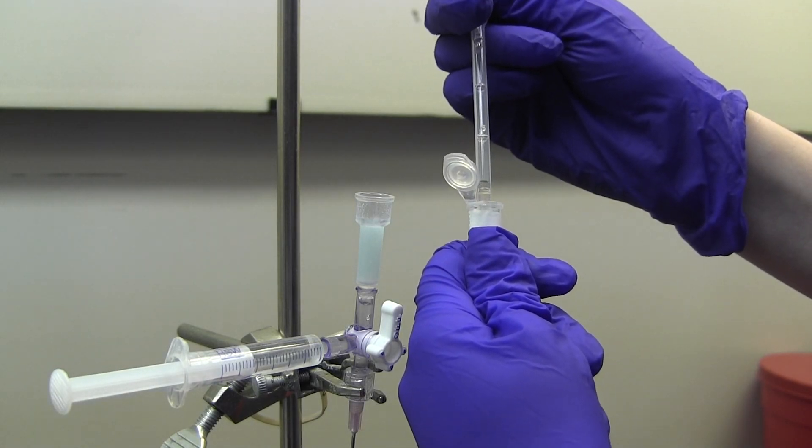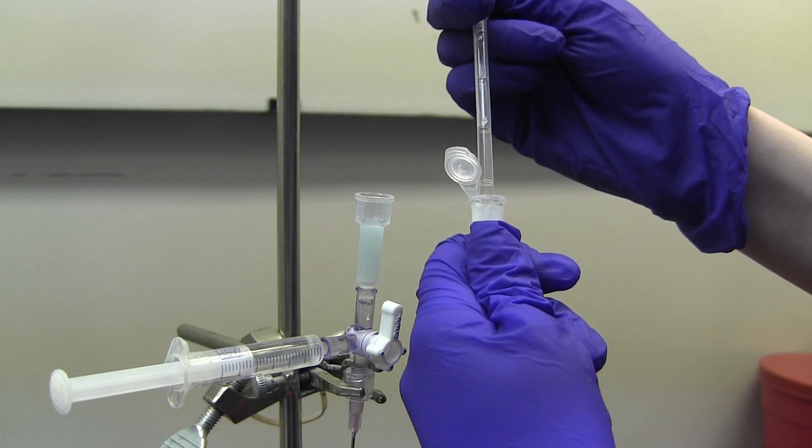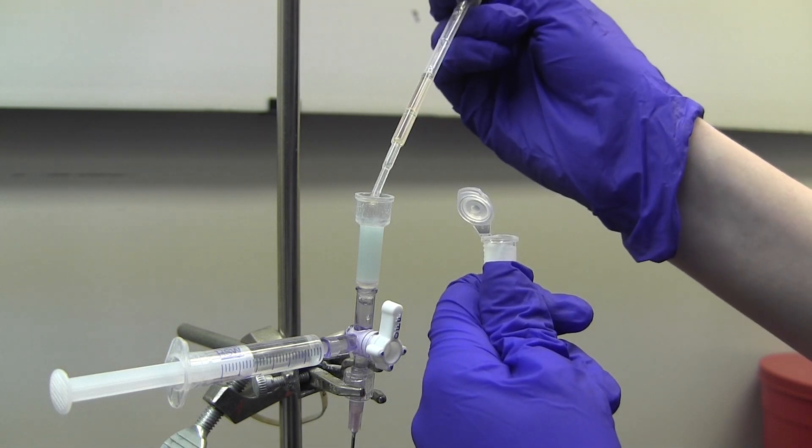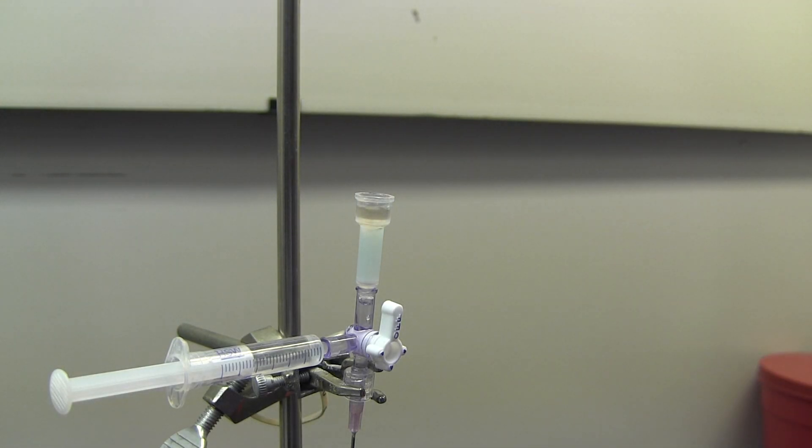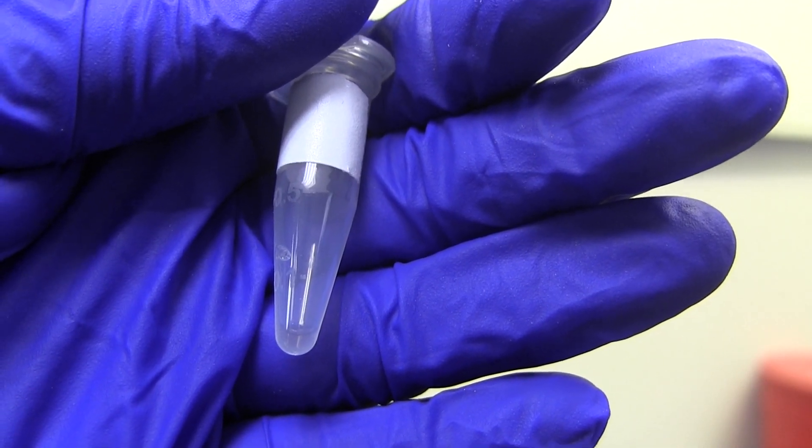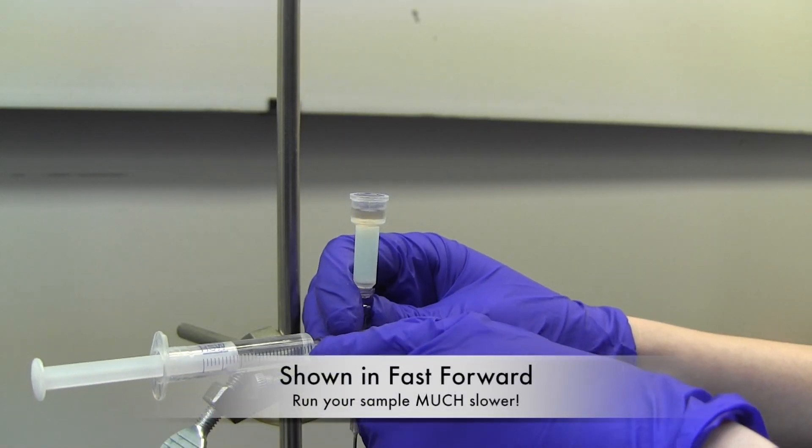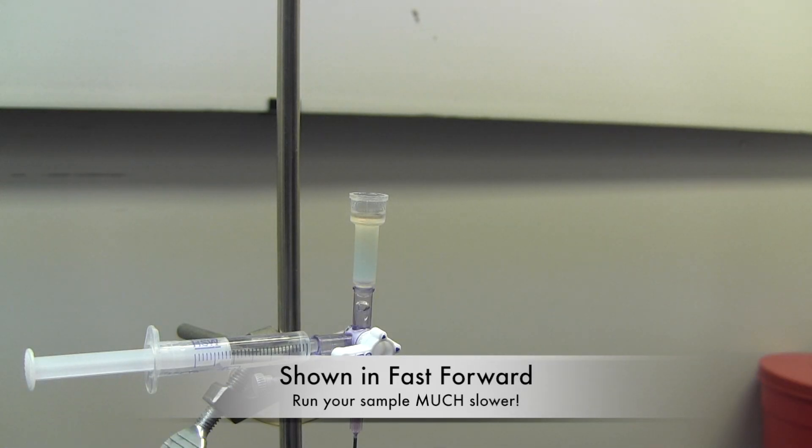Once the column is washed, close the stopcock and remove excess solution from the top. Then, add 0.5 milliliters of your unknown. Make sure to save one drop of your sample. This will be used later in the lab. Allow your unknown to run into the column slowly so there is enough time for the target protein to bind.